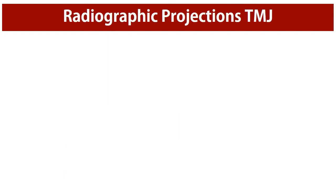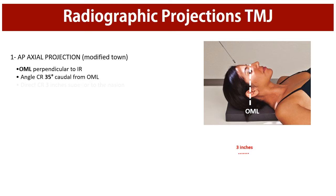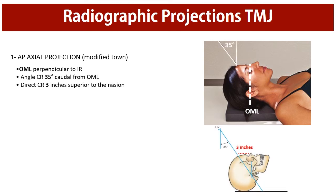Now let's get back to our main subject: plain X-ray projections. The first projection is apiaxial, which is a modification of the Towns method. Ask the patient to remove all opaque objects from the head and neck region, then rest the posterior skull against the image receptor. Adjust the head so that the orbitomeatal line (OML) is perpendicular to the image receptor, then angle the X-ray tube 35 degrees caudal and center it about 3 inches superior to the nasion. Finally, X-rays should be made in both closed and open mouth positions for comparison purposes.